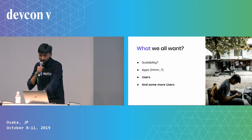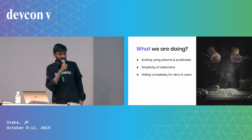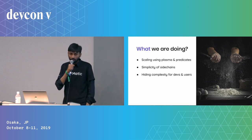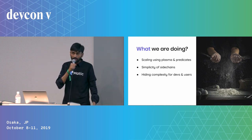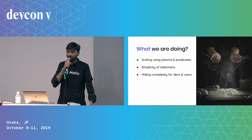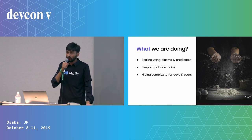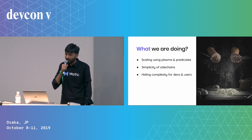It works both ways: you need users, and for that you need more and more dApps, and for that you need scalability. That's how we work — think backward and work forward. We provide scalability as a layer two using Plasma and predicates.